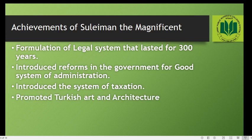Finally, Suleiman promoted Turkish art and architecture greatly. A very famous figure was Mimar Sinan, an engineer and architect who constructed more than 300 structures during the rule of the Ottomans.